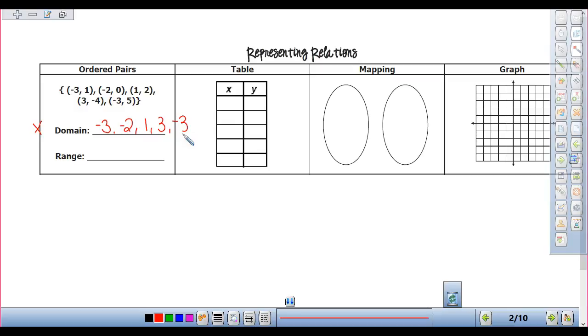Our range is our what values? Our y. Our y. So if you remember our ordered pairs are written as x comma y, right? So that's where we're getting our x's and our y's from. Our y's are always our second numbers. So my range is 1, 0, 2, 3, 4, 5.